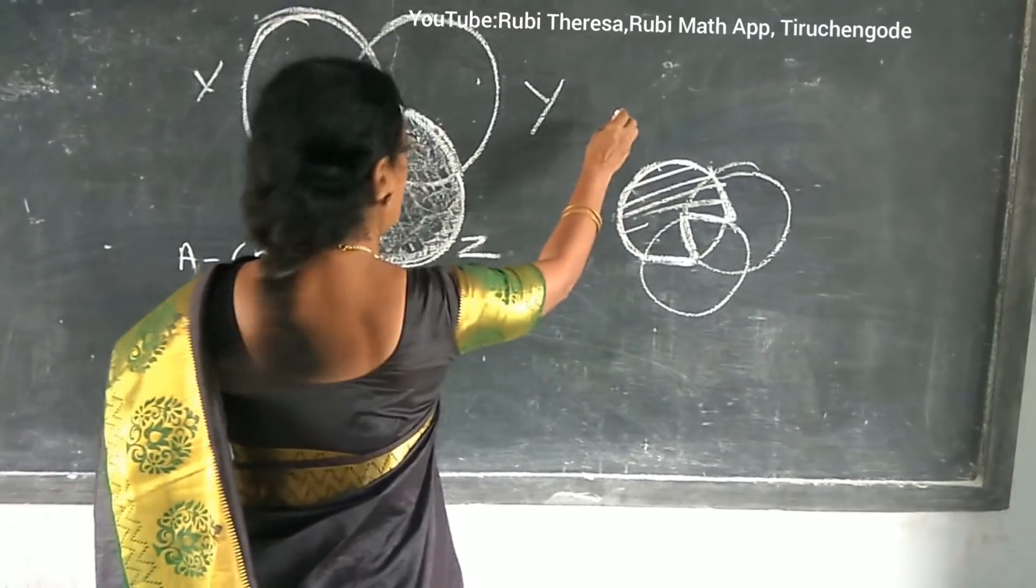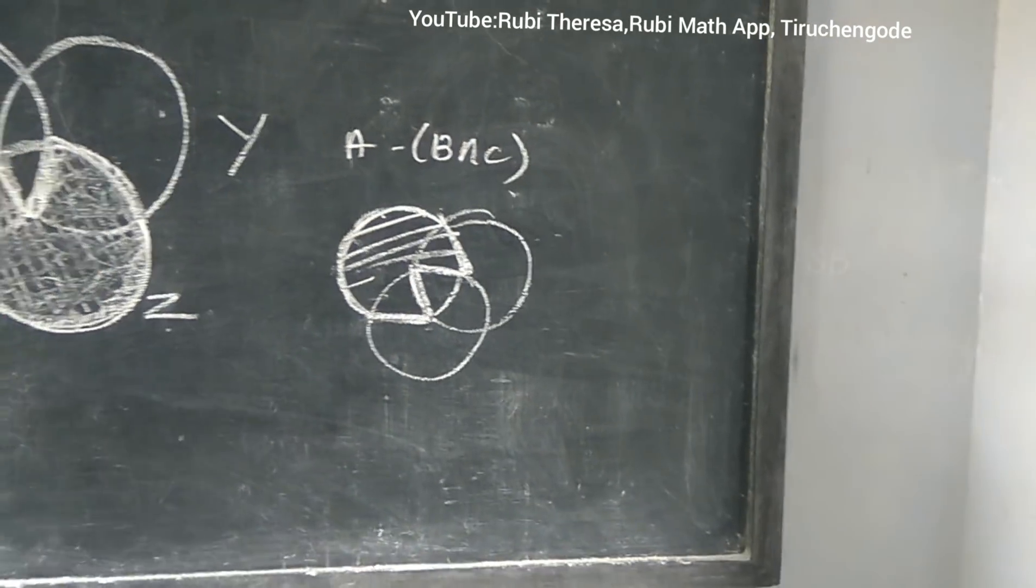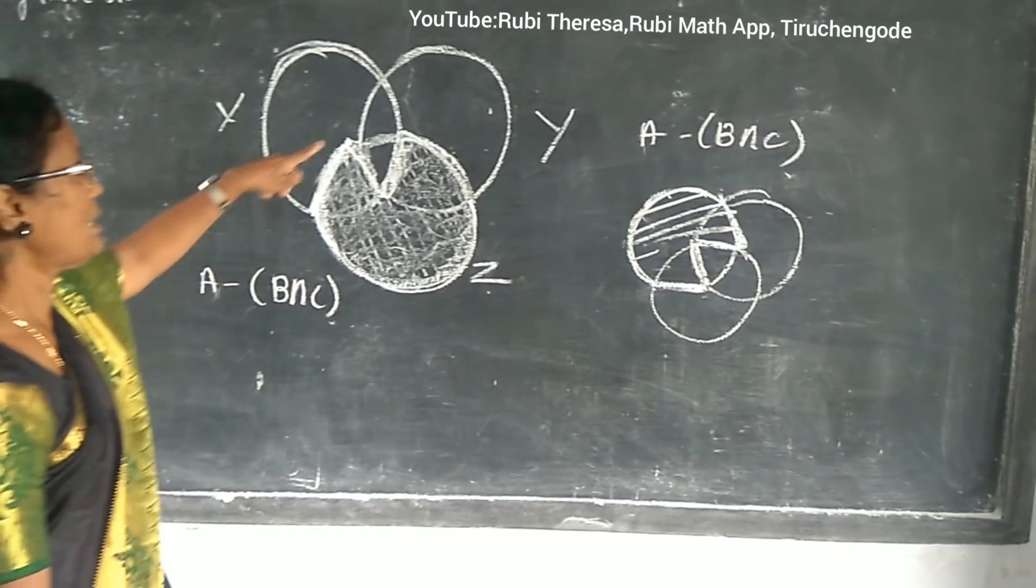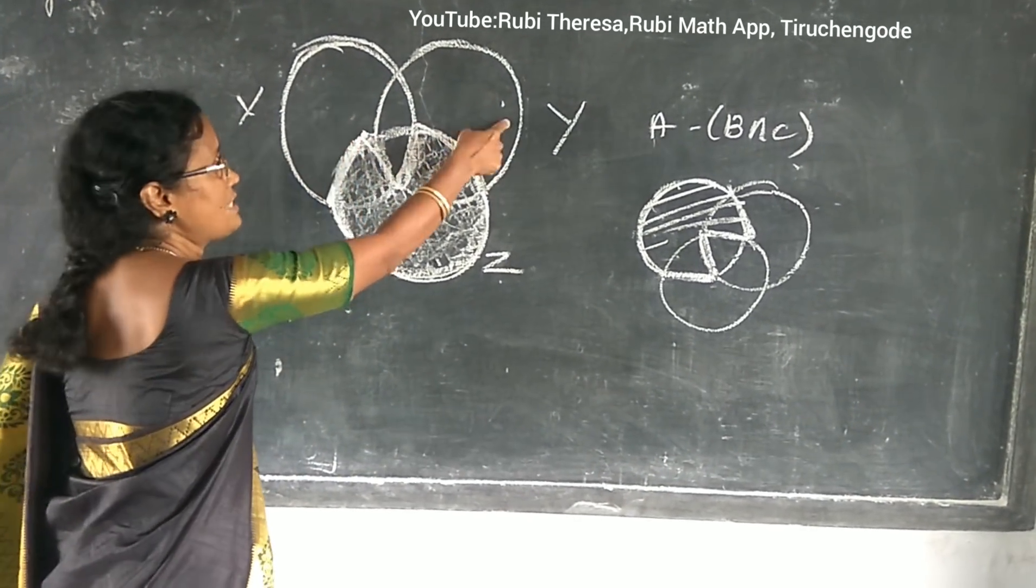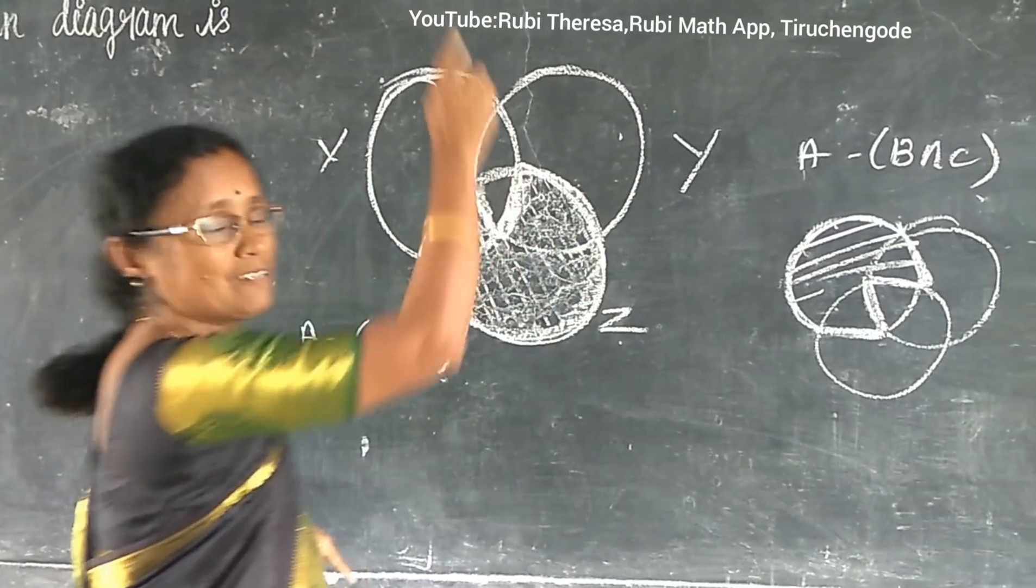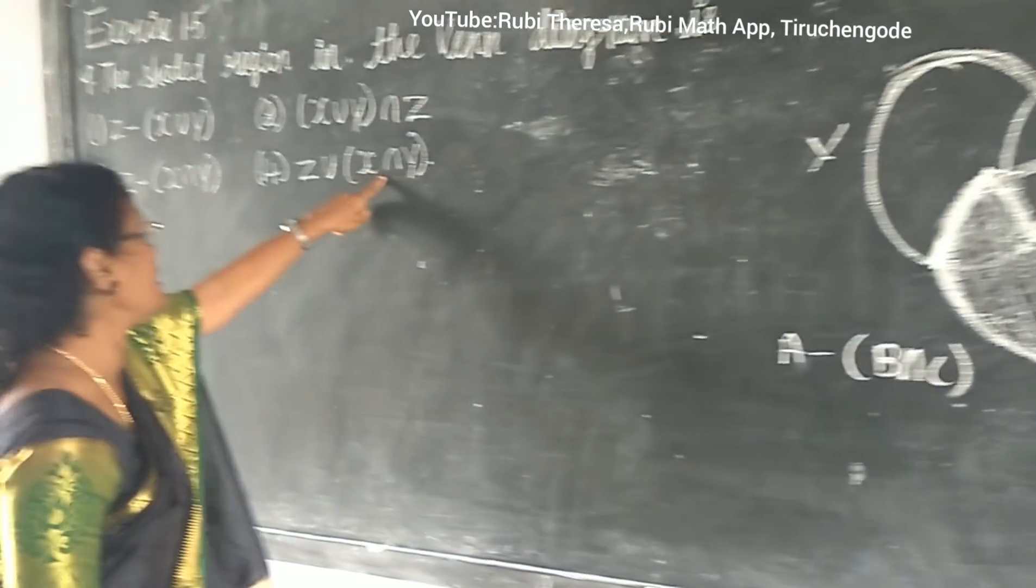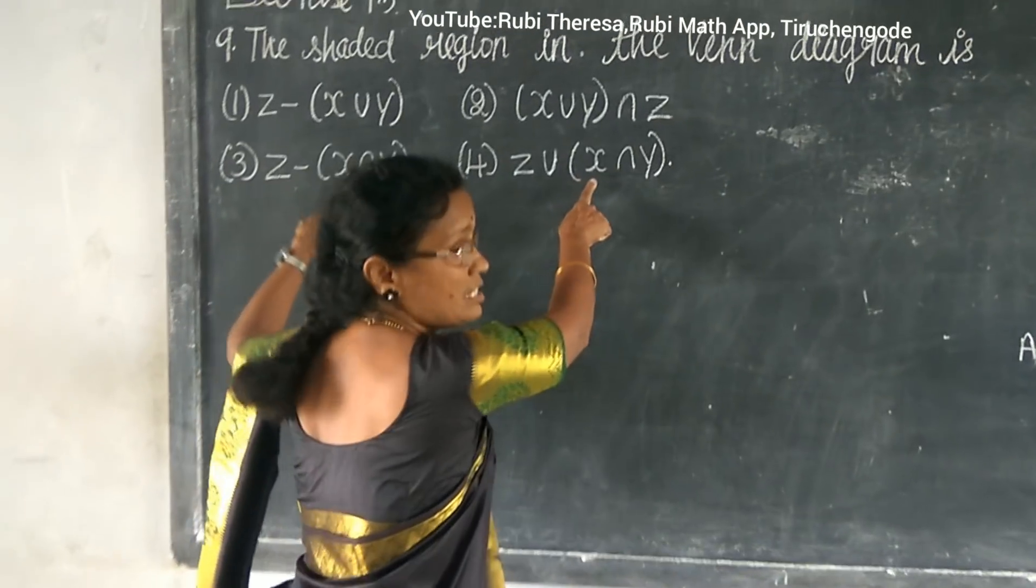But here what I told - A difference B intersection C. Let me see here, what is the intersection? X intersection Y. Where is it? X intersection Y. So I meant these two.